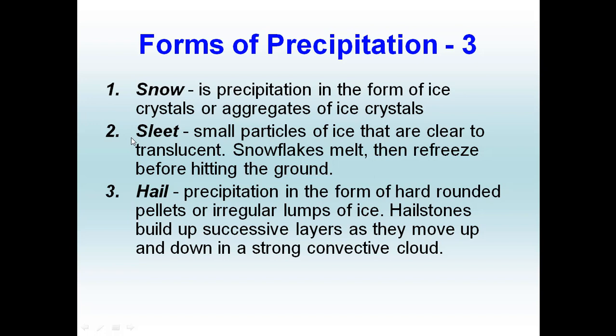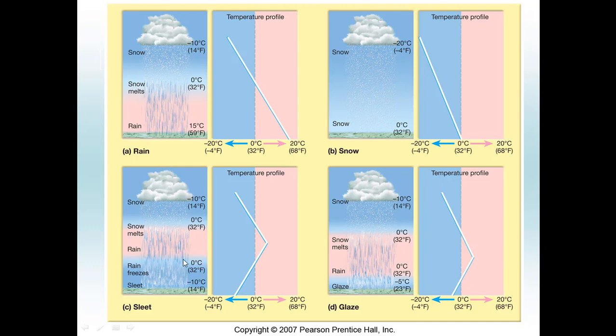Sleet is half rain, half snow — you can think of it that way. How sleet forms is that in the upper parts of the atmosphere we have precipitation falling as snow, then it gets to a warmer part of the atmosphere and those snowflakes actually melt. As they continue to fall closer to the surface, they re-encounter colder air near the surface and try to refreeze back into snow, but don't quite make it, and fall as almost a half-snowflake, half-raindrop hybrid.